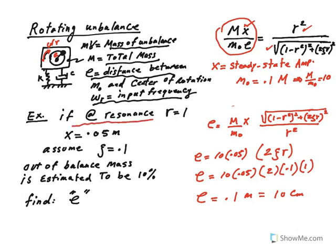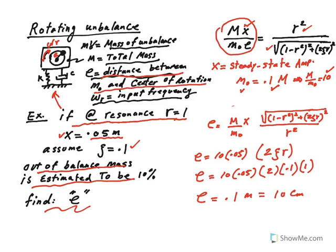It says if at resonance for this system shown here, at R equal 1, X the steady state amplitude is measured to be 0.05 meter, that's 5 centimeters, assuming that the damping ratio is 0.1. And without giving you the mass of the total mass or the mass of the unbalance, they say if the out-of-balance mass is estimated to be 10%, that means M0 is equal to 10% of the total mass, so M/M0 becomes 10. And then we want to find E, the distance between M0 and the center of rotation, that radius basically.